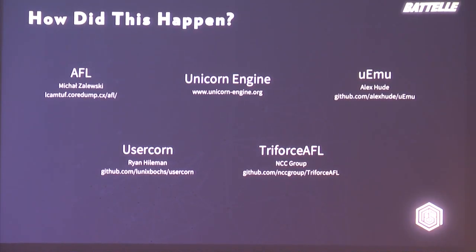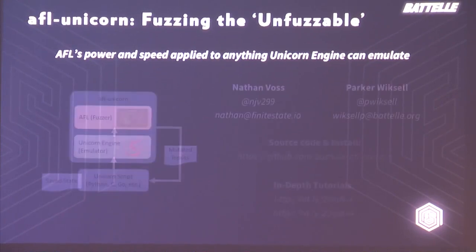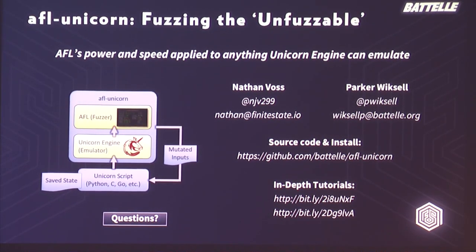To give credit where credit's due, this is a combination of open source tools with a little glue between them: AFL itself, the Unicorn engine, inspiration from UMU which is an IDA plugin for dumping state to load into Unicorn, and the usercorn and Triforce AFL projects which are similar with a different spin. To sum up, AFL Unicorn lets you apply AFL's power and speed to absolutely anything that Unicorn engine can emulate, no matter how big or small, as long as you can emulate it from start to finish with your scripting. Our contact information and the source code are available on GitHub, and two more tutorials going into much more depth are at the provided links. Any questions?